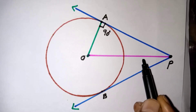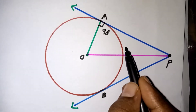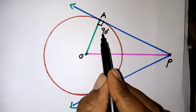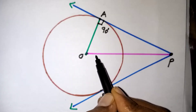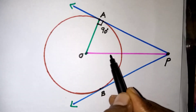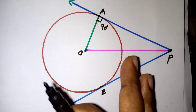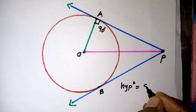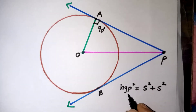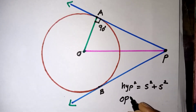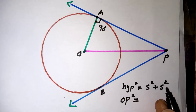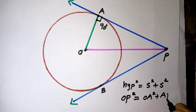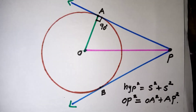For a right-angled triangle, the Pythagorean theorem is always satisfied. The hypotenuse is the side opposite the 90-degree angle — here that is OP, the longest side. So according to the Pythagorean theorem: OP² = OA² + AP².